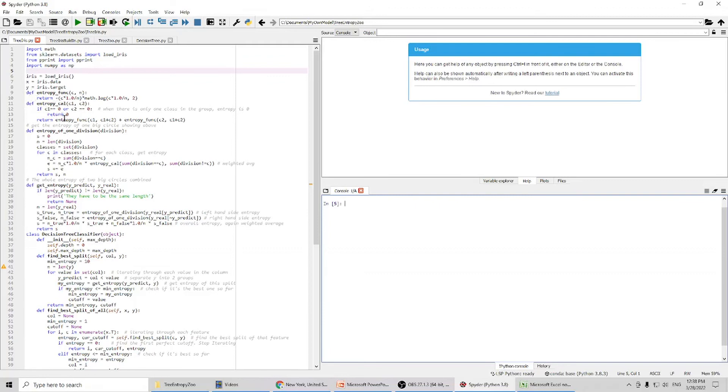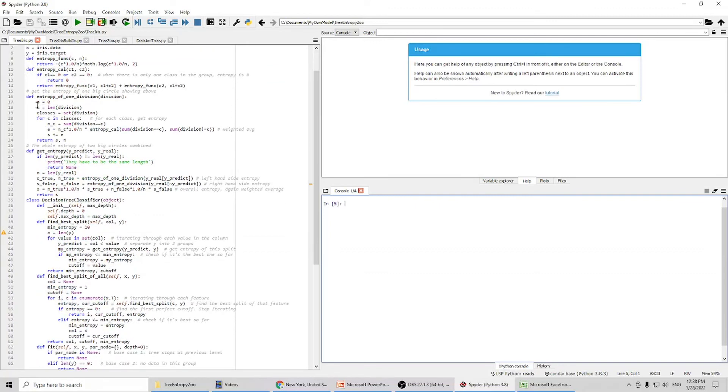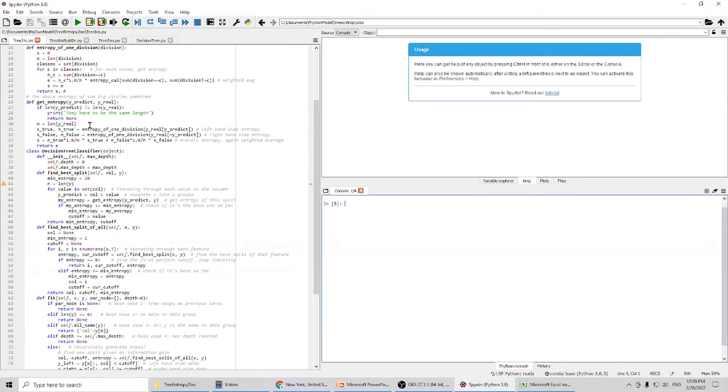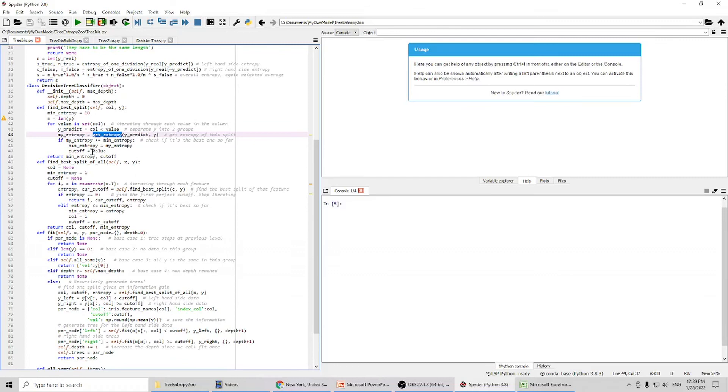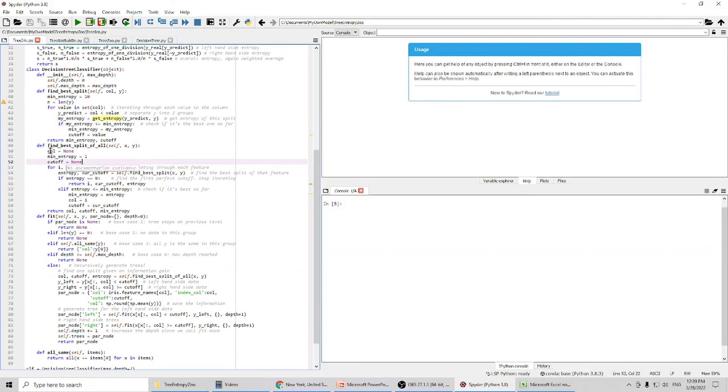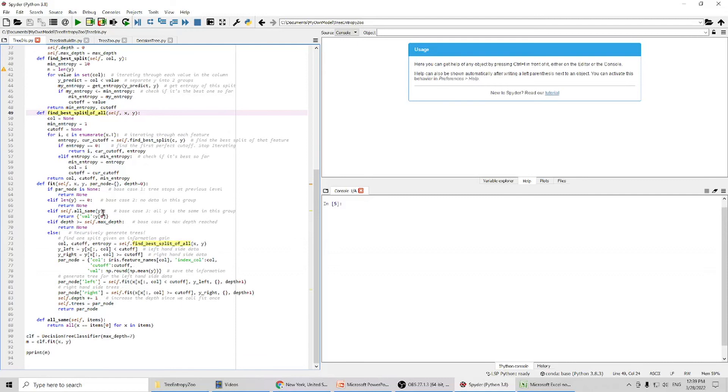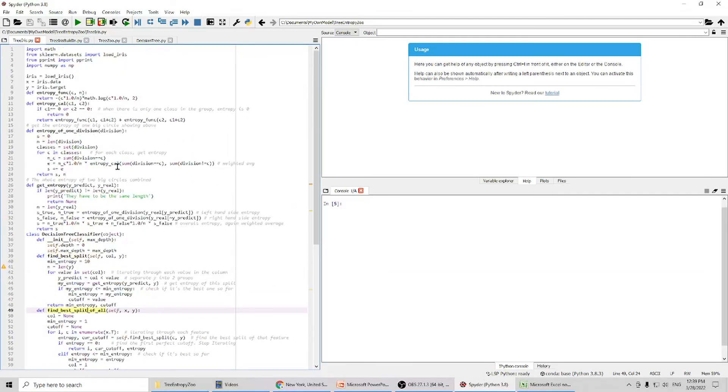This will calculate the entropy. And this will calculate entropy for one division. And here you can see I call get_entropy function and go through all those features and then to find best split. And again, this recursive function will call find_best_split inside find_best_split function. And then we're going to build our decision tree. Let's run the program.